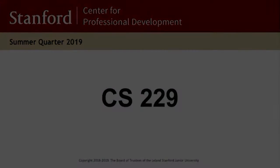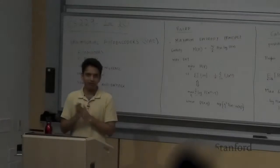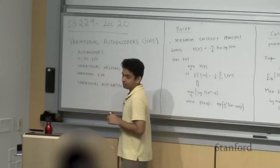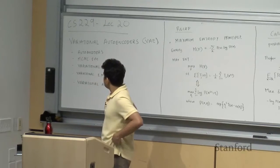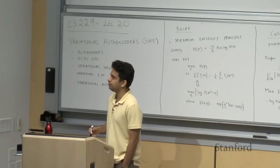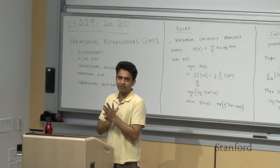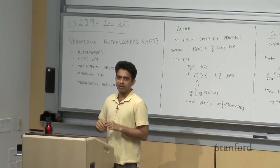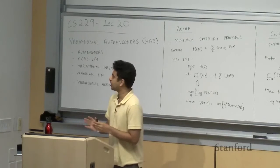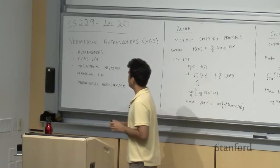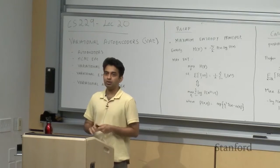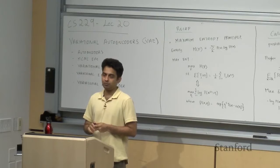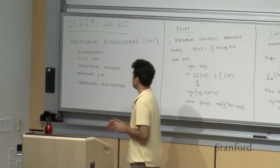Welcome back everyone. This is lecture 20 of CS229, and the main topic for today will be variational autoencoders. Variational autoencoders is probably one of the simplest deep generative models. Deep generative models is a very hot topic in machine learning right now, where we try to build generative models of our data using neural networks. Variational autoencoders was one of the early models which made good progress in this field, and it's probably the model one should start studying first because it has the key components used in more advanced models.